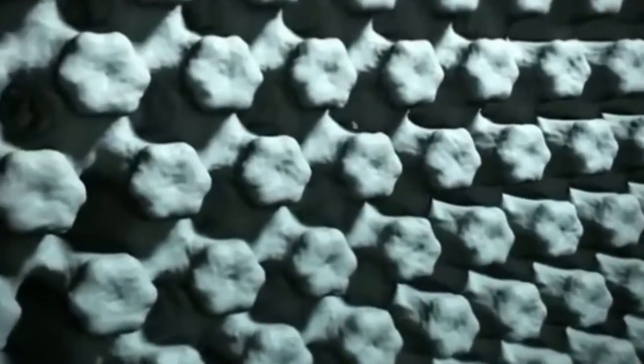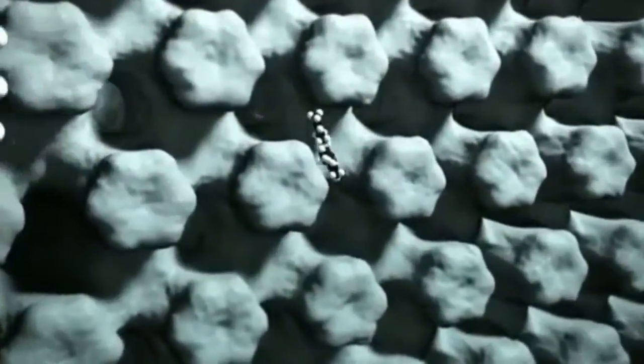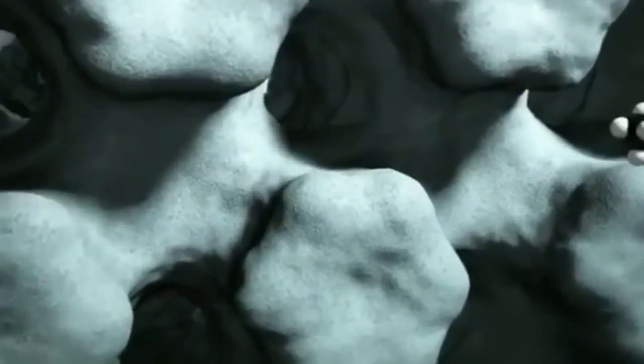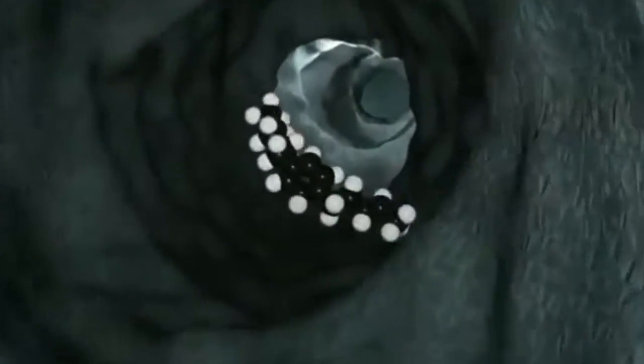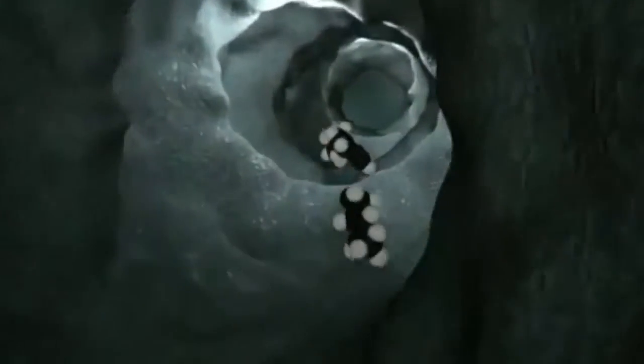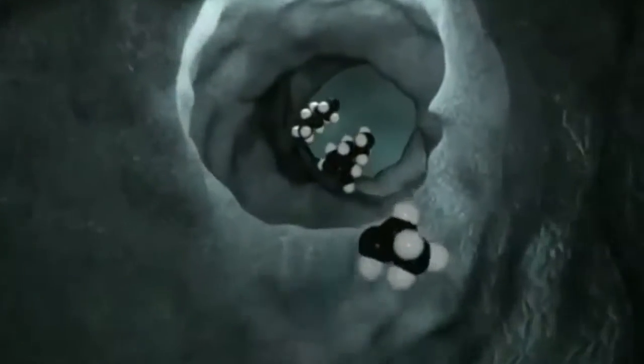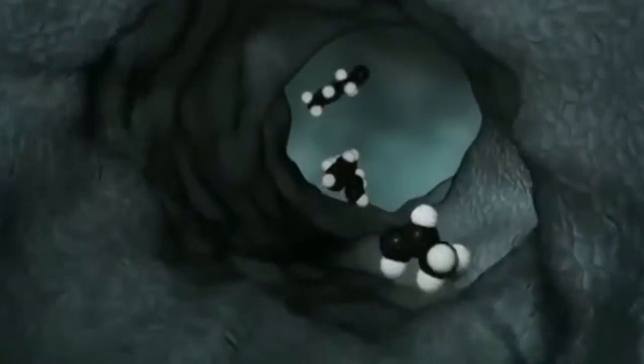In petroleum refining, for example, long hydrocarbon chains, or feed molecules, enter the zeolite crystal through the micropores and are channeled to the active sites inside the zeolite crystal. Once inside the zeolite, the long hydrocarbon chains are converted or cracked into smaller, more valuable product molecules, such as gasoline, diesel, and other products.